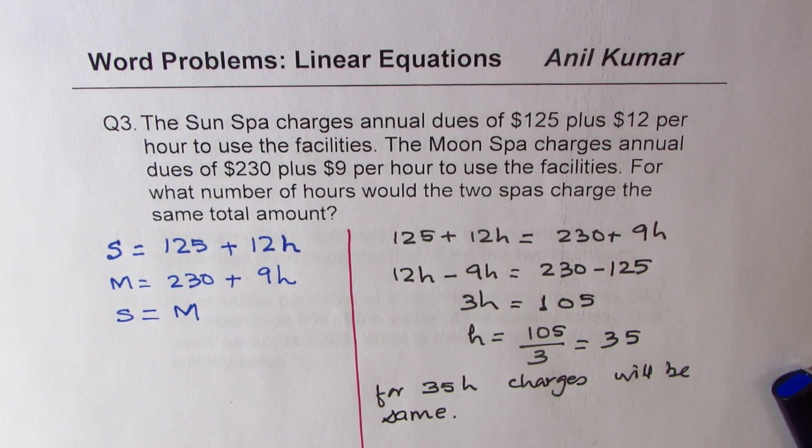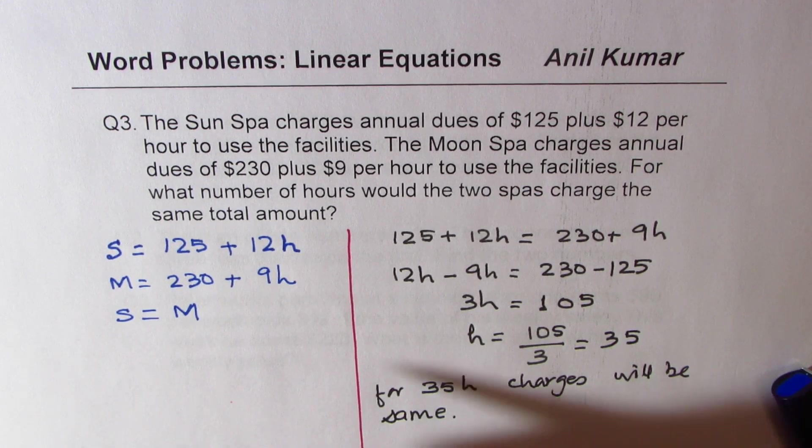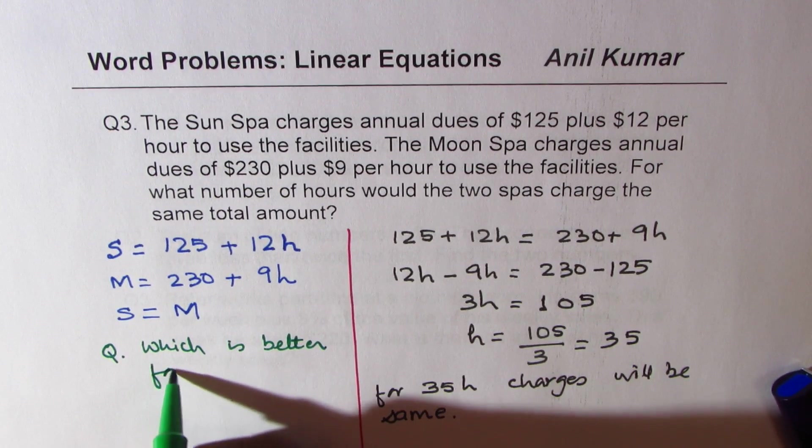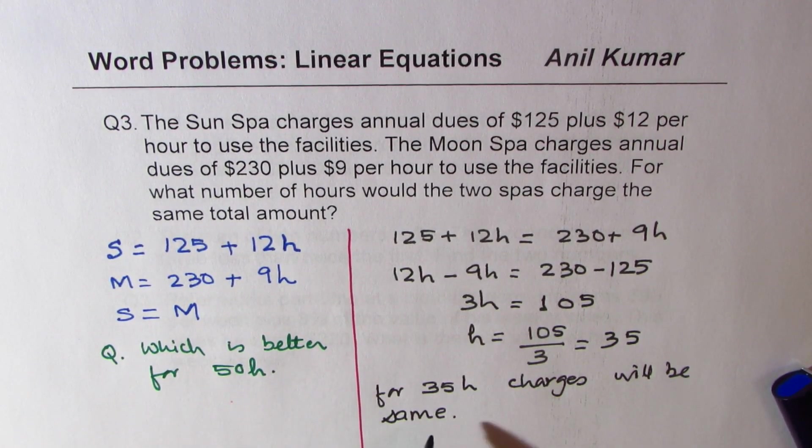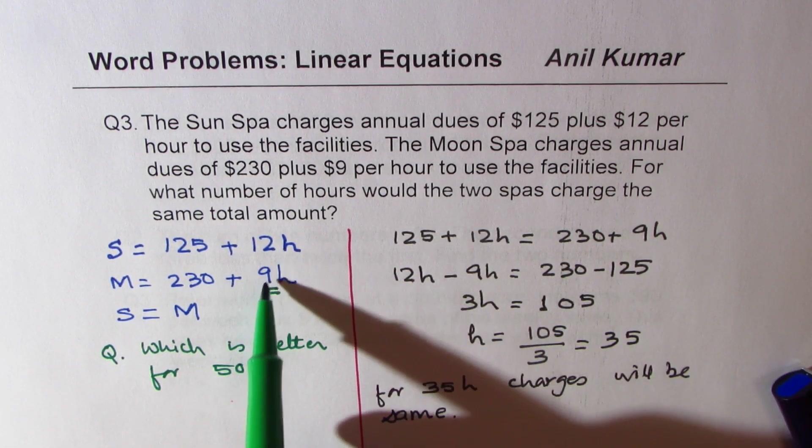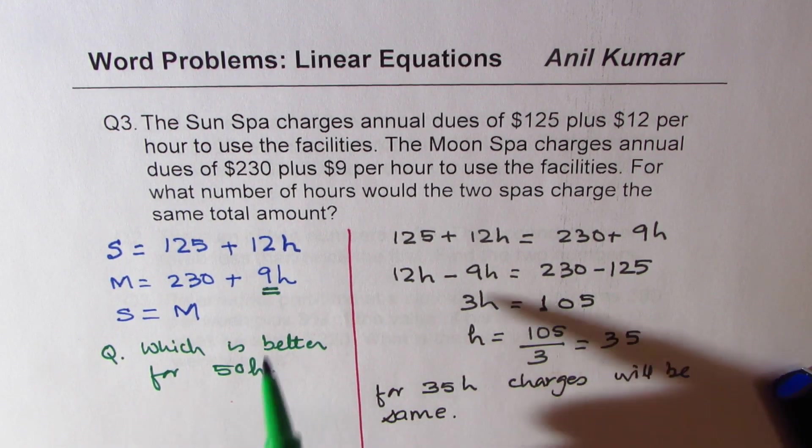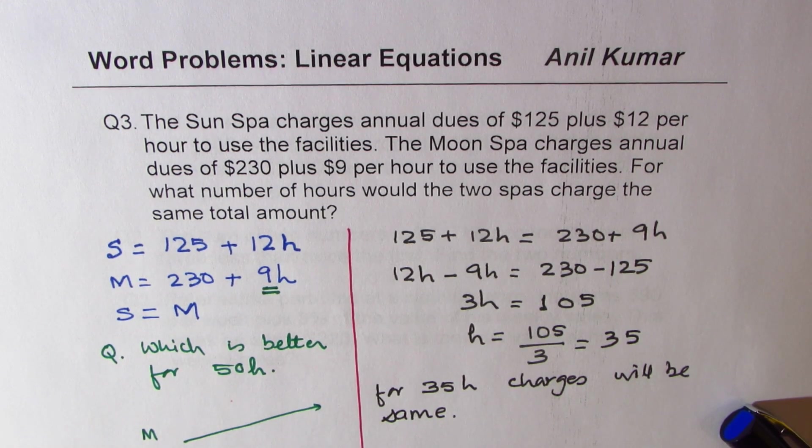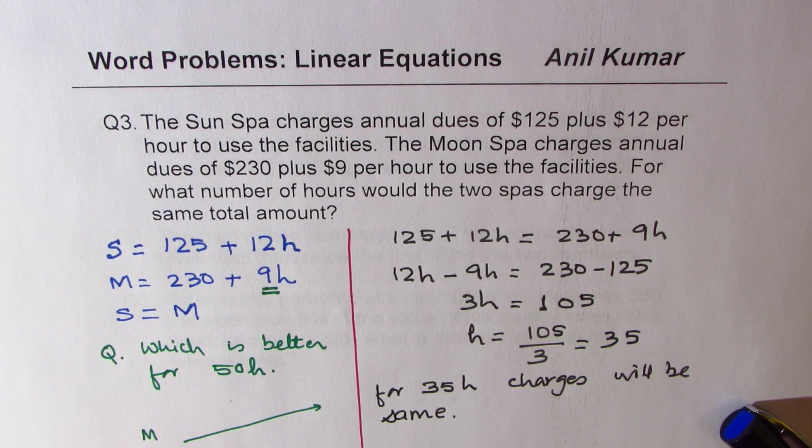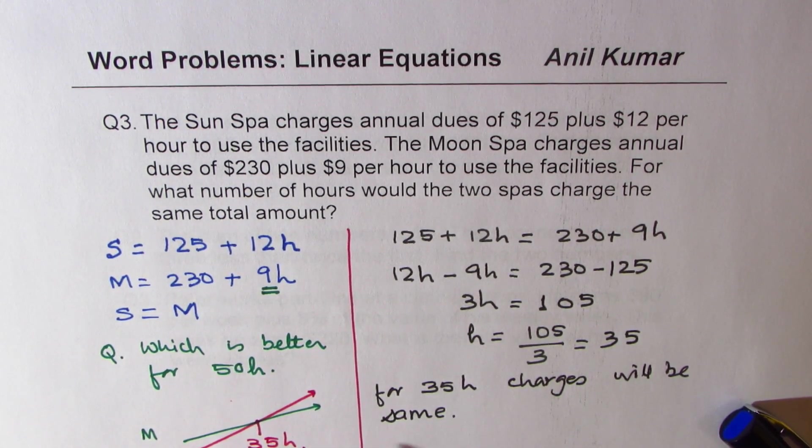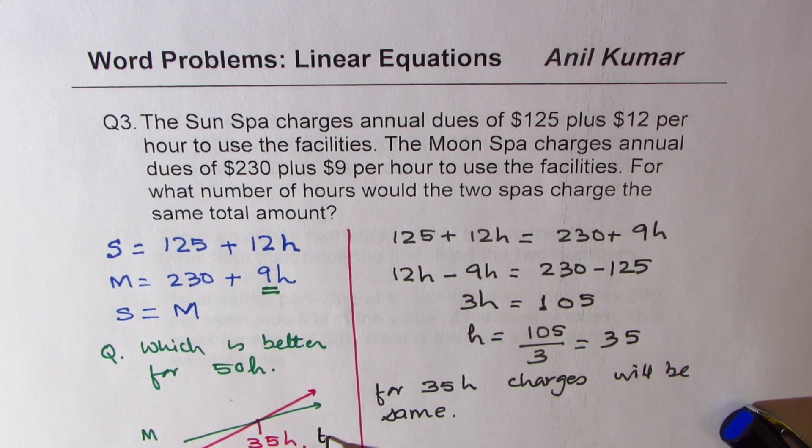You get an idea. So the other question could have been, let me extend, which is better for 50 hours? So for 35 it is same. For 50 hours, this will be better because you are saving $3 per hour each time. If you sketch and solve this particular question, then the graph of moon is kind of like this. Then the graph for the sun, which starts lower, will be kind of like this. So this point here is for 35 hours. This graph is for time here on this side and cost here on the other side.